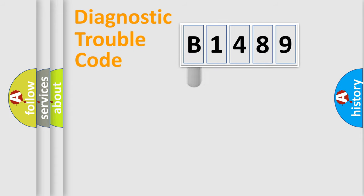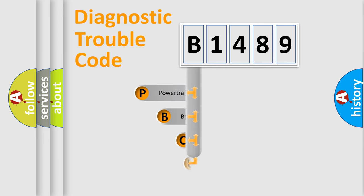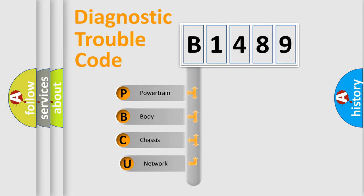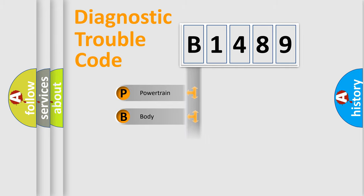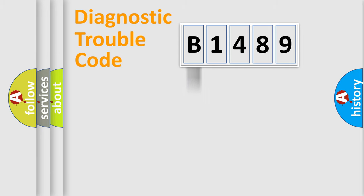Let's look at the history of diagnostic fault code composition according to the OBD2 protocol, which is unified for all automakers since 2000. We divide the electric system of an automobile into four basic units: powertrain, body, chassis, and network.